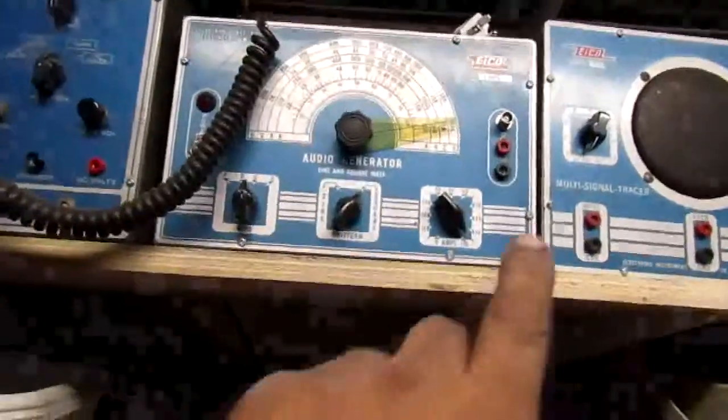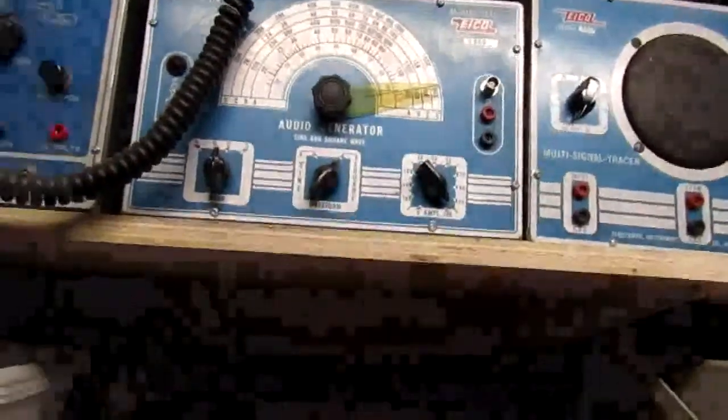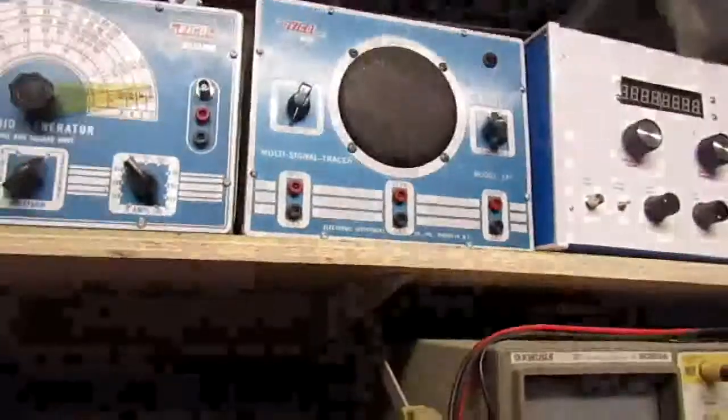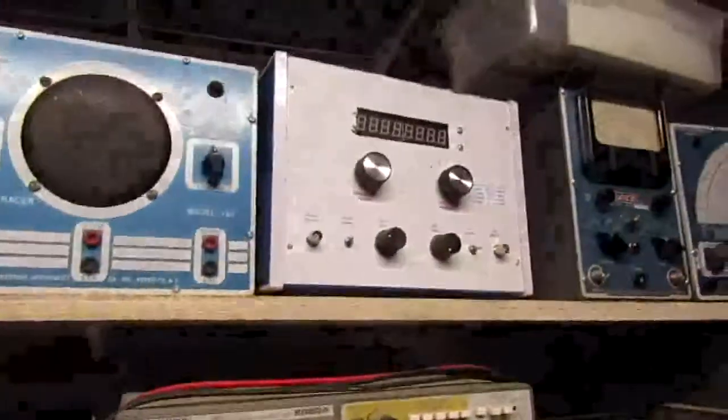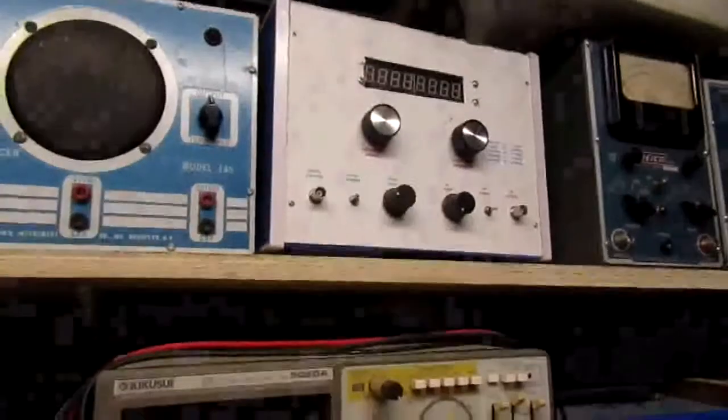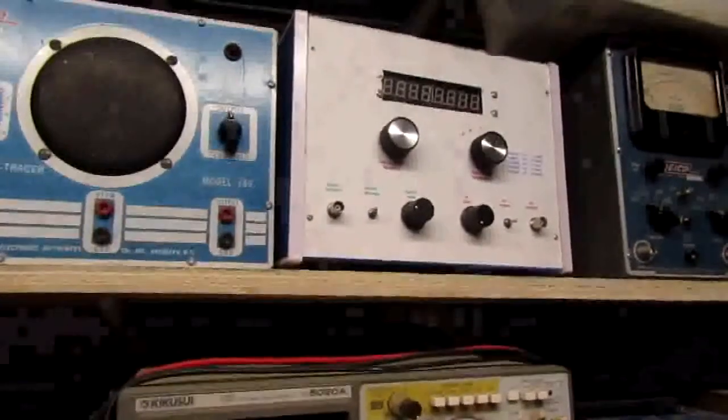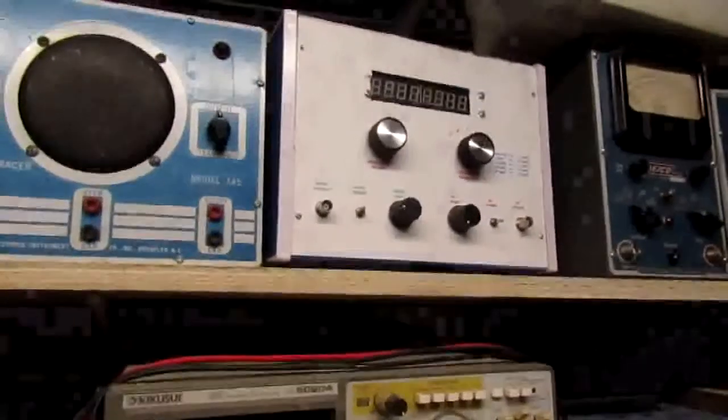It's really hard to find these without the mangled front panels. The 145 signal tracer. This is one I built out of an old Heathkit RF generator. I think I picked it up for $20 on eBay. Built a cabinet for it.